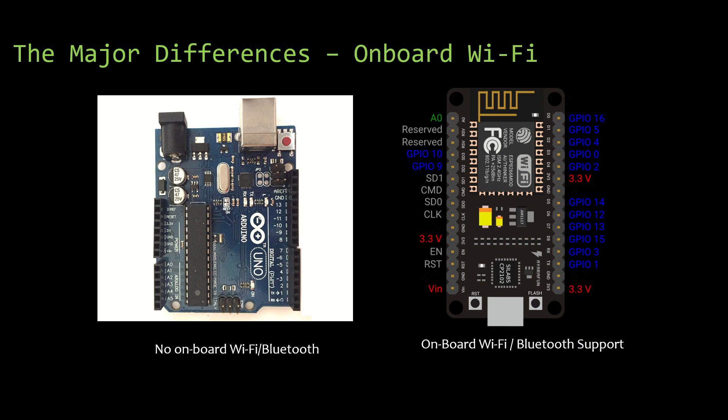The major difference is with respect to Wi-Fi connectivity and Bluetooth support. NodeMCU has got onboard Wi-Fi and Bluetooth support — it has the ESP8266 embedded onto the board — but Arduino does not have Wi-Fi and Bluetooth support inbuilt. You need to go for an external IC to be connected to it to get the Bluetooth or Wi-Fi support.